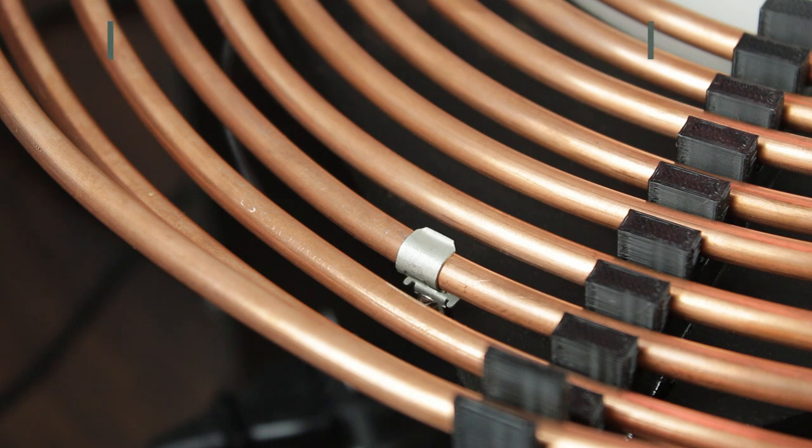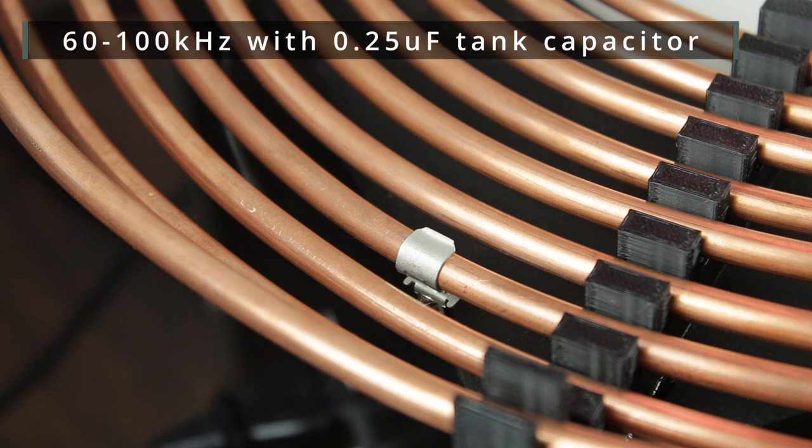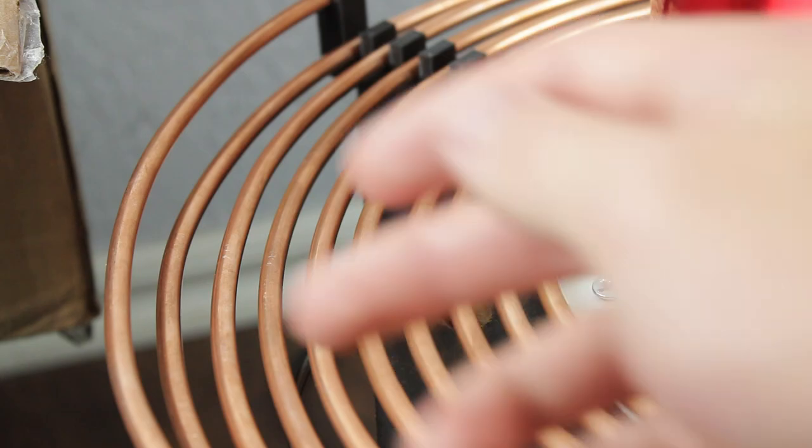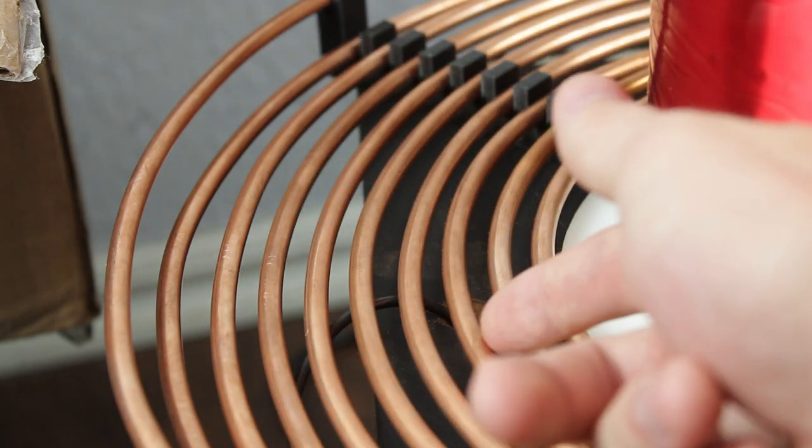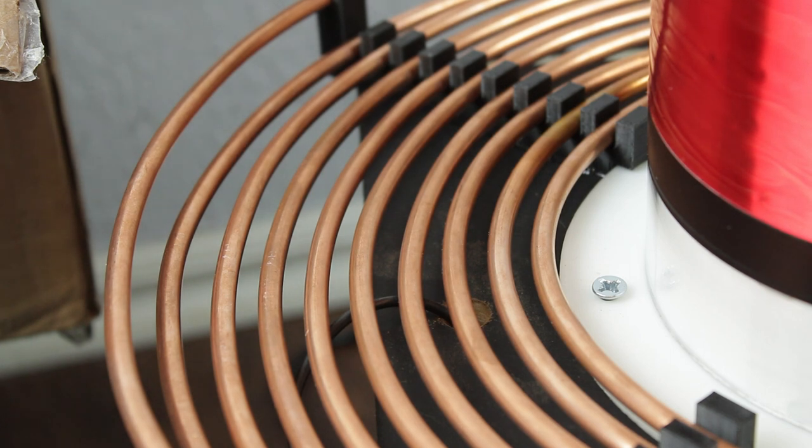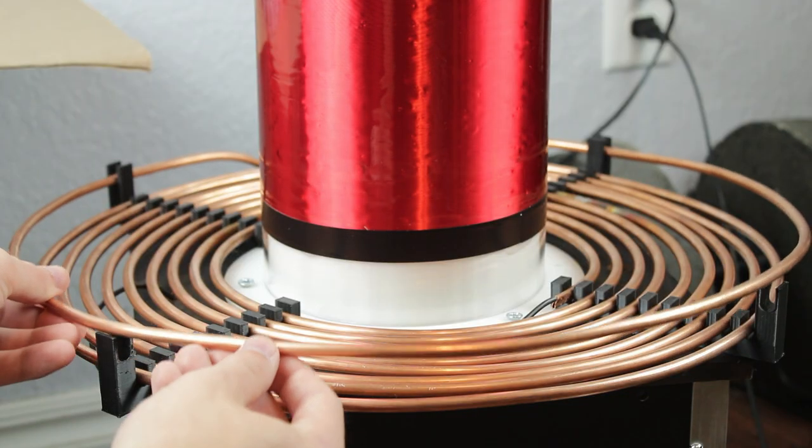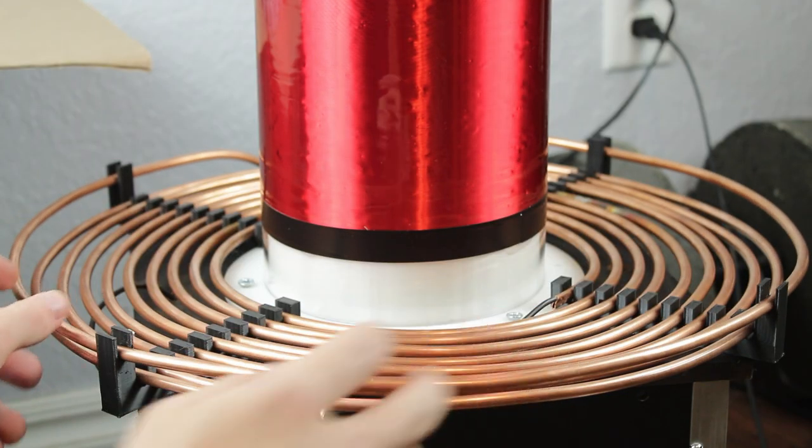This pairs nicely with the 0.25 microfarad MMC capacitor bank to give a frequency range of roughly 60 to 100 kHz. The coupling coefficient is right around 0.16, according to JavaTC, which is slightly higher than most coils I've seen, but not really high enough to seriously stress the circuit. Also a strike rail is installed to keep most of the secondary output off the main coil.